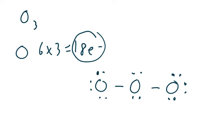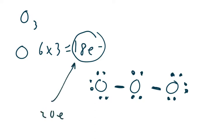When we count — 1, 2, 3, 4, 5, 6, the line is 7, 8, 9, 10, 11, 12, 13, 14, 15, 16, 17, 18, 19, 20 — we get 20. Yet we need to have 18, so we're going to have to remove two electrons.